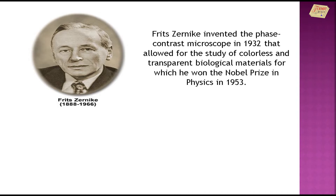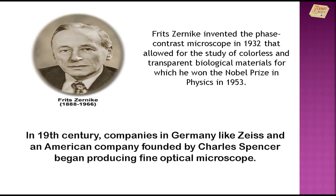Fritz Zernike invented the phase contrast microscope in 1932 that allowed for the study of colorless and transparent biological materials, for which he won the Nobel Prize in Physics in 1953. In the 19th century, companies in Germany like Zeiss and an American company founded by Charles Spencer began producing fine optical microscopes.